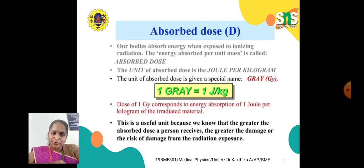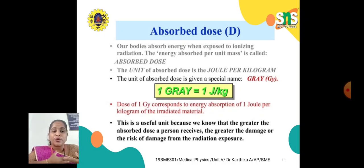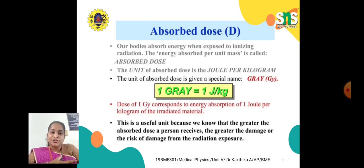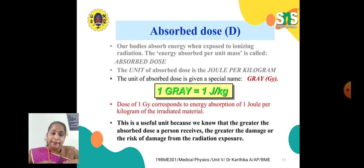What is absorbed dose? Our bodies absorb energy when exposed to ionizing radiation. This energy absorbed per unit mass is called absorbed dose, and 1 Gray equals 1 Joule per kilogram. This is a useful unit because the greater the absorbed dose a person receives, the greater the damage or risk of damage from radiation exposure.